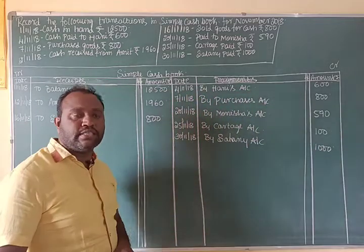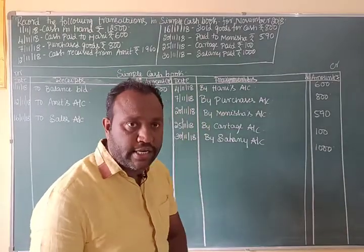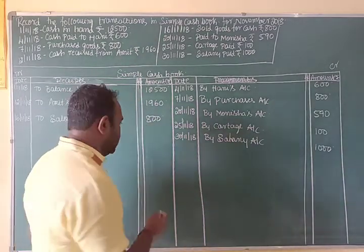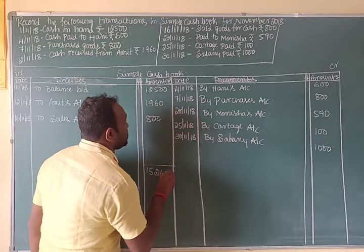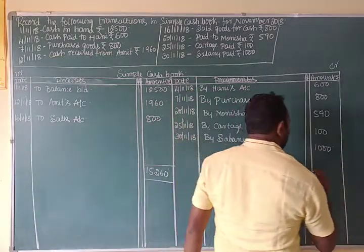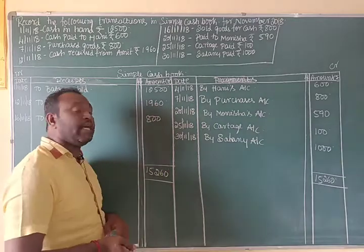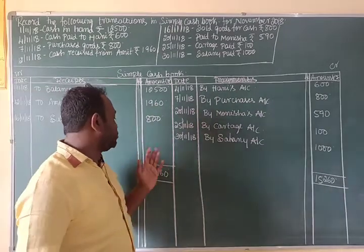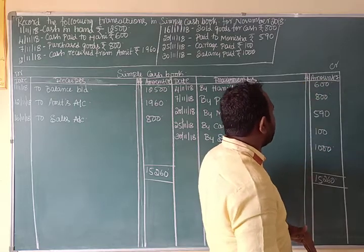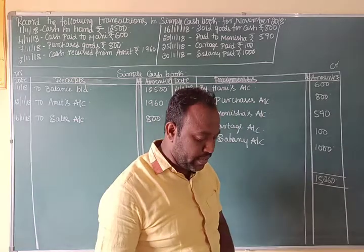There are no other transactions. Now we should balance the account. The debit side total: 12,500 plus 1,960 plus 800 equals 15,260. On the payment side: 600 plus 800 plus 1,400 plus 290 plus 100 plus 1,000 equals 3,090. Both sides must be equal at 15,260. The balance carried down is 12,170.